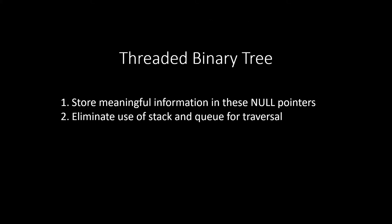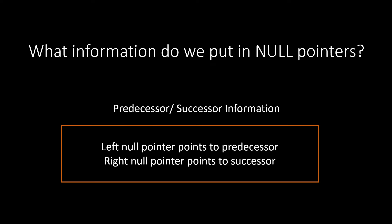So, to mitigate this, we have threaded binary tree wherein we store meaningful information in these null pointers such that it avoids the use of stack and queue. Now, the question is, what can this information be? It is nothing but predecessor and the successor information for the traversal.